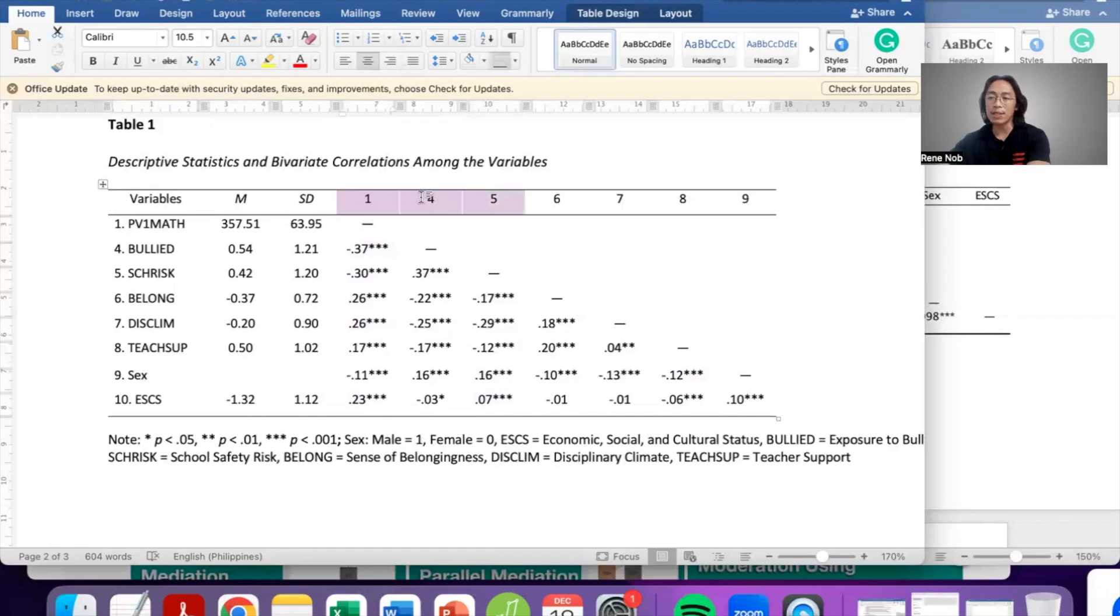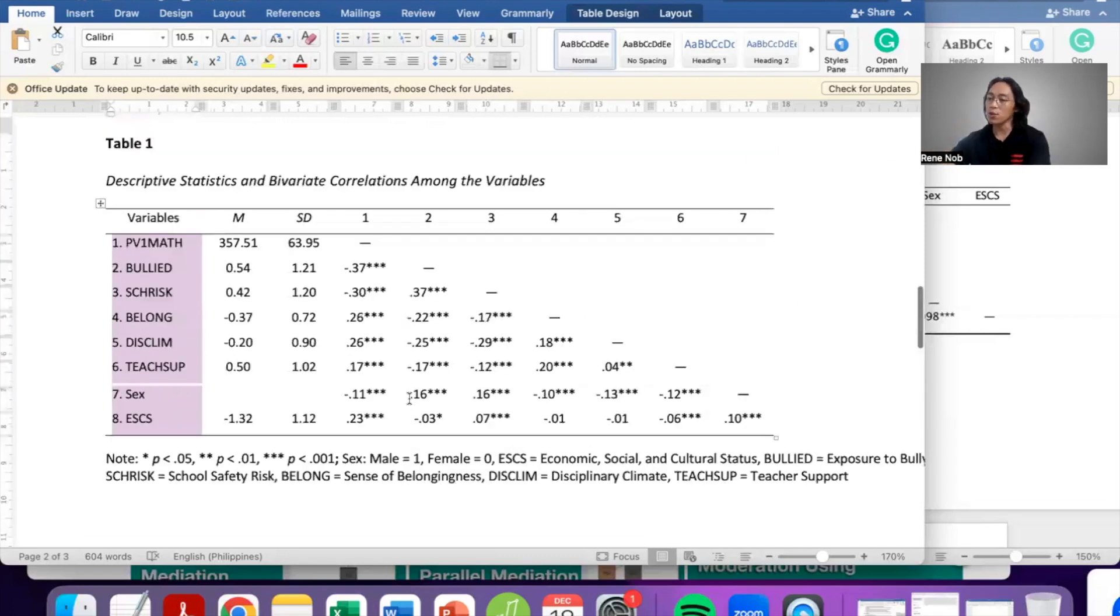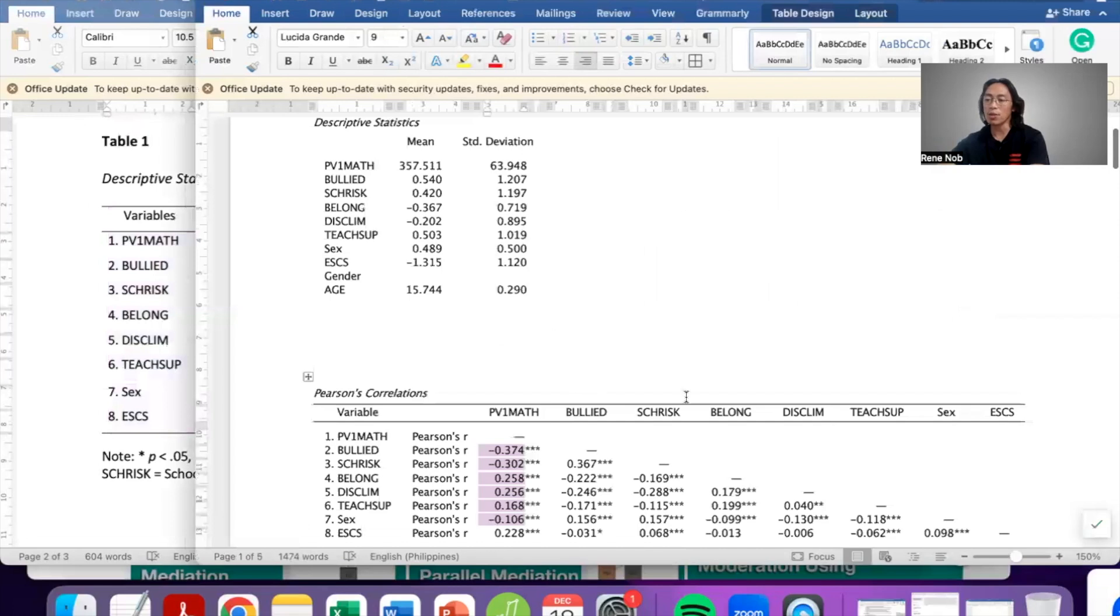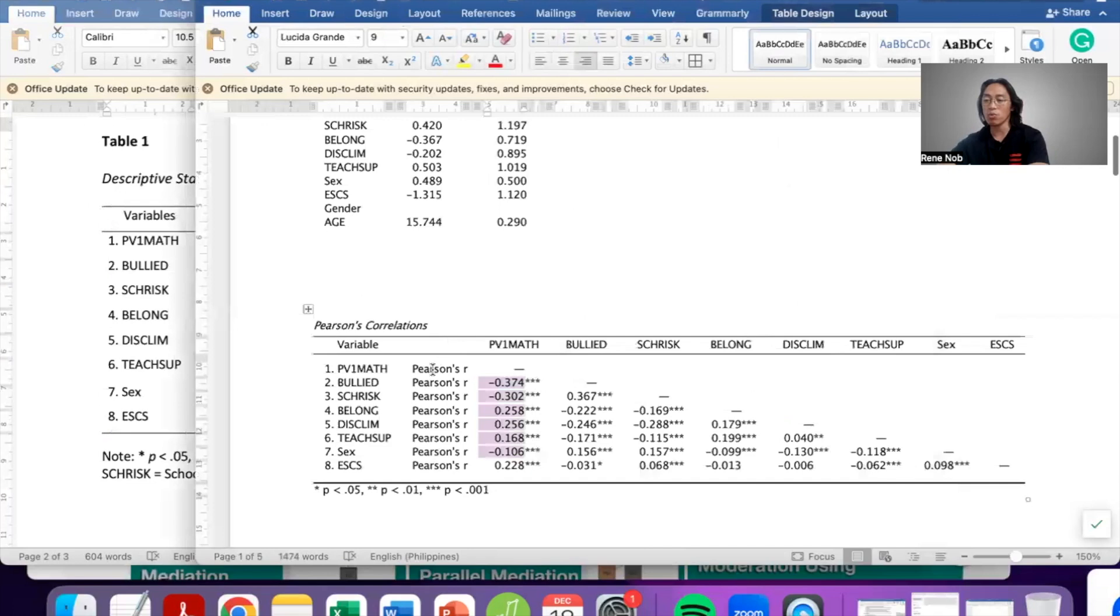To simplify, you will notice that my headers, instead of putting the full variable names, I use numerals. So the relationship between belongingness and school safety risk is negative 0.17. Instead of putting the full names which would consume a lot of space, just put the numerals. That's why it's important that your variables are numbered here. So I basically combined the two tables, descriptives and the correlation coefficients, into 1.